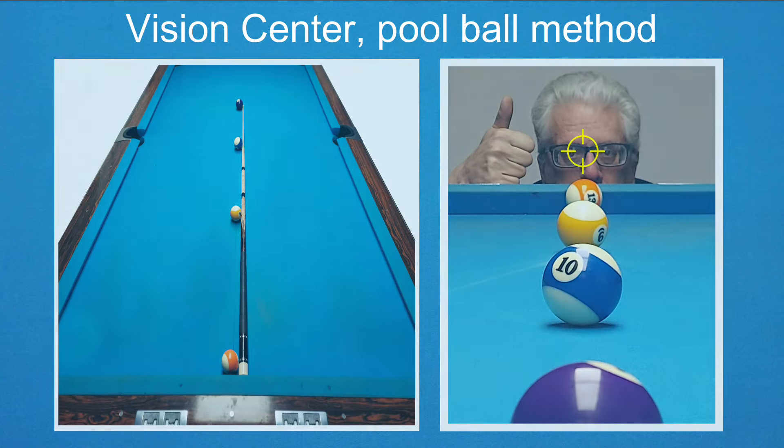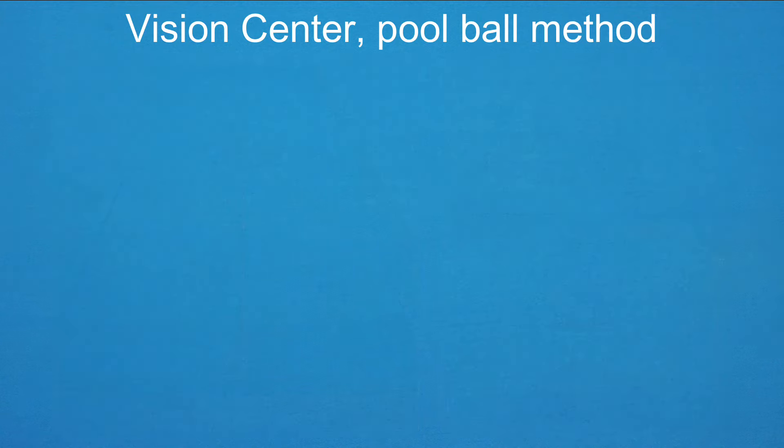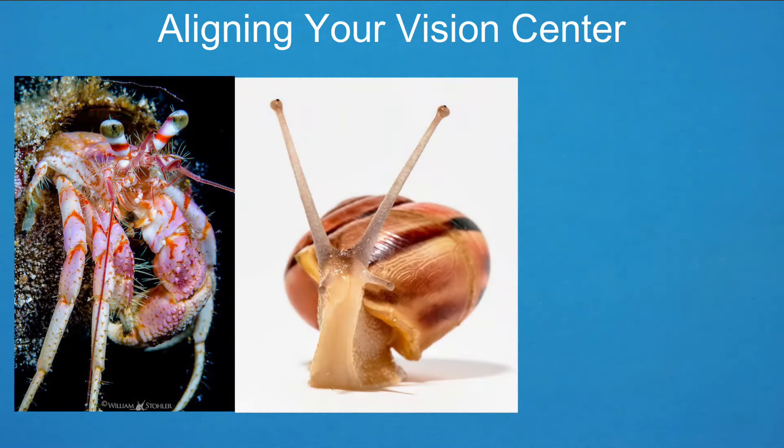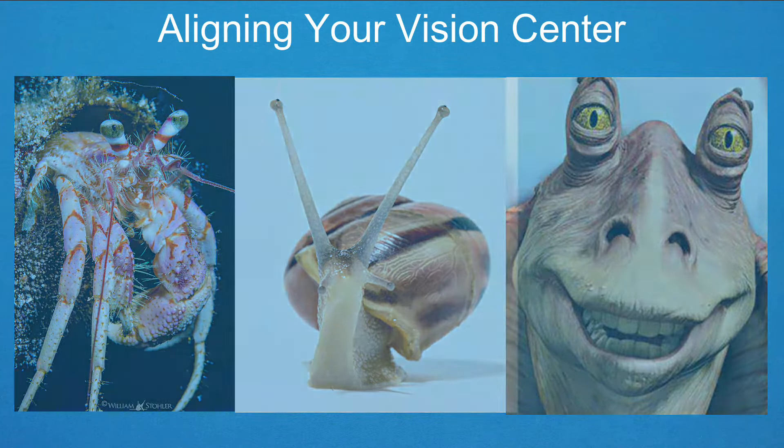Alright, that was easy. Now comes the challenging part, aligning your cue stick underneath your vision center. Unlike some creatures, humans are not able to rotate their eyes independently. Your eyes rotate together with your head, or the head can remain fixed and the eyes shift left and right.